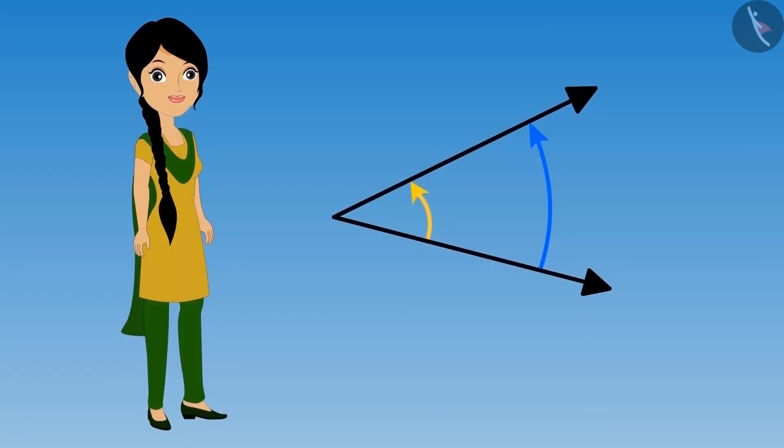Meena has made two angles between two lines. Is the angle marked in blue greater than the angle marked in red? Or are both the angles the same? These two angles are the same. Do you know why? Discuss this with your friends and teachers.